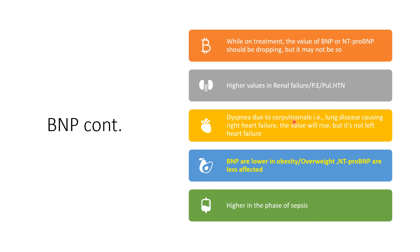Dyspnea due to cor pulmonale — that is lung disease causing right heart failure — will give us values that are high, though it is not left heart failure. BNP values are lower in obese individuals or people who are overweight, but NT-proBNP is not affected under those circumstances. So in someone who is obese or overweight and you are not comfortable with the BNP result because it is likely going to be lower than expected, do NT-proBNP — that will not be affected by weight.